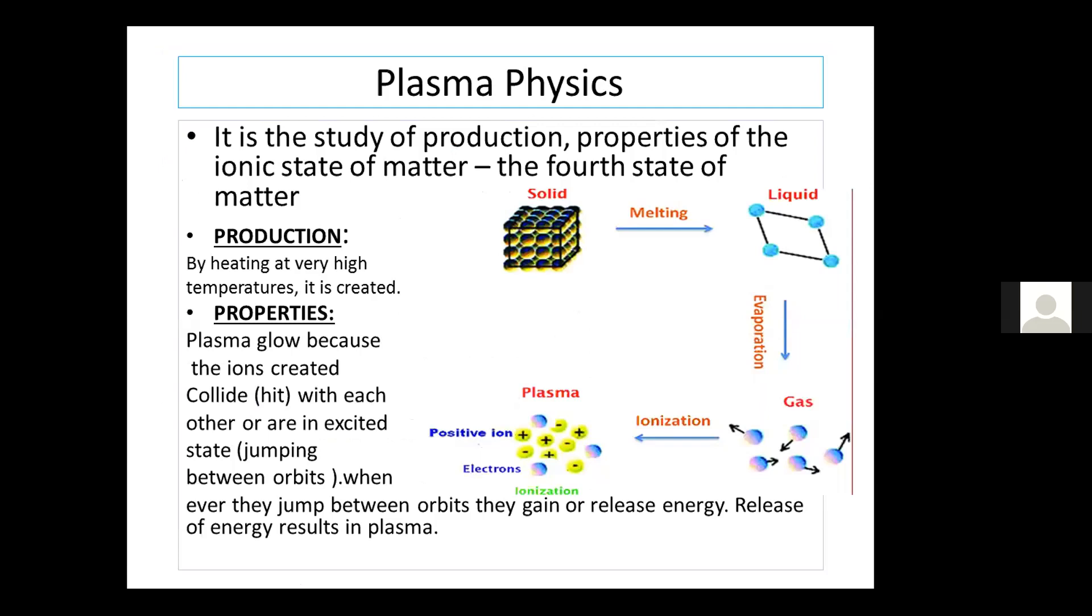Plasma physics. It is the study of production and properties of the ionic state of matter, that is the fourth state of matter. When solid is heated it changes into liquid. On further heating it changes into gas. At very high temperatures, the gas particles are split up into positive ions and negative ions. The negative ions are conveniently called electrons. Thus plasma state is achieved. So the production of plasma takes place at very high temperatures.